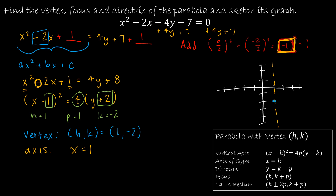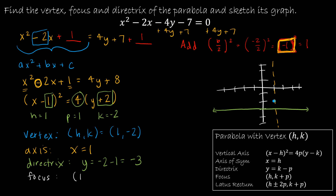Next is the directrix, which is also a line: y = k − p = −2 − 1 = −3. So y = −3 is this line right here. The significance of the directrix is that every point on our parabola is equidistant from the directrix and the focus. That brings us to the focus, which is (h, k + p) = (1, −2 + 1) = (1, −1). So (1, −1) is my focus.